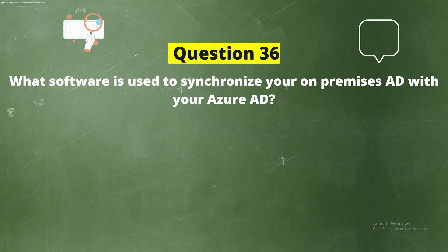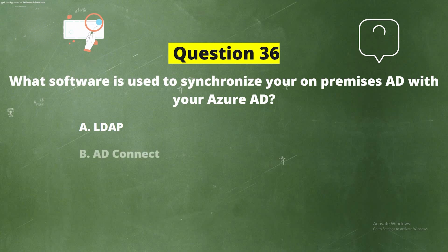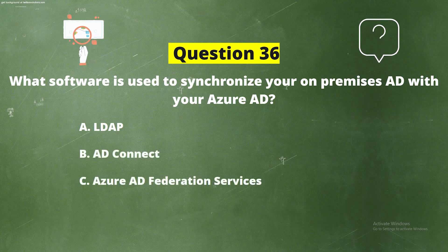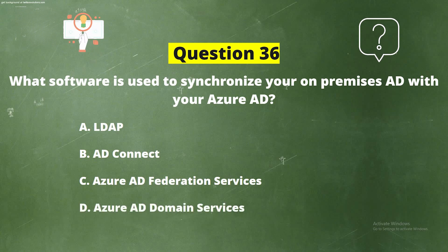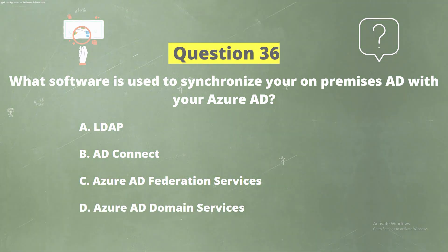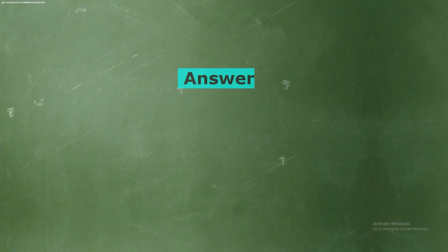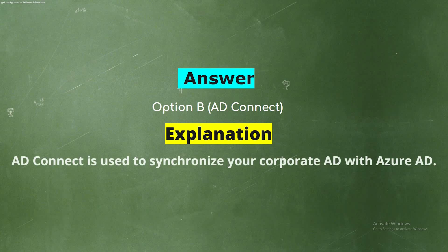Question 36: What software is used to synchronize your on-premises Active Directory with your Azure AD? The options are: Option A, LDAP; Option B, AD Connect; Option C, Azure AD Federation Services; Option D, Azure AD. The correct answer is Option B — AD Connect is used to synchronize your corporate AD with Azure AD.